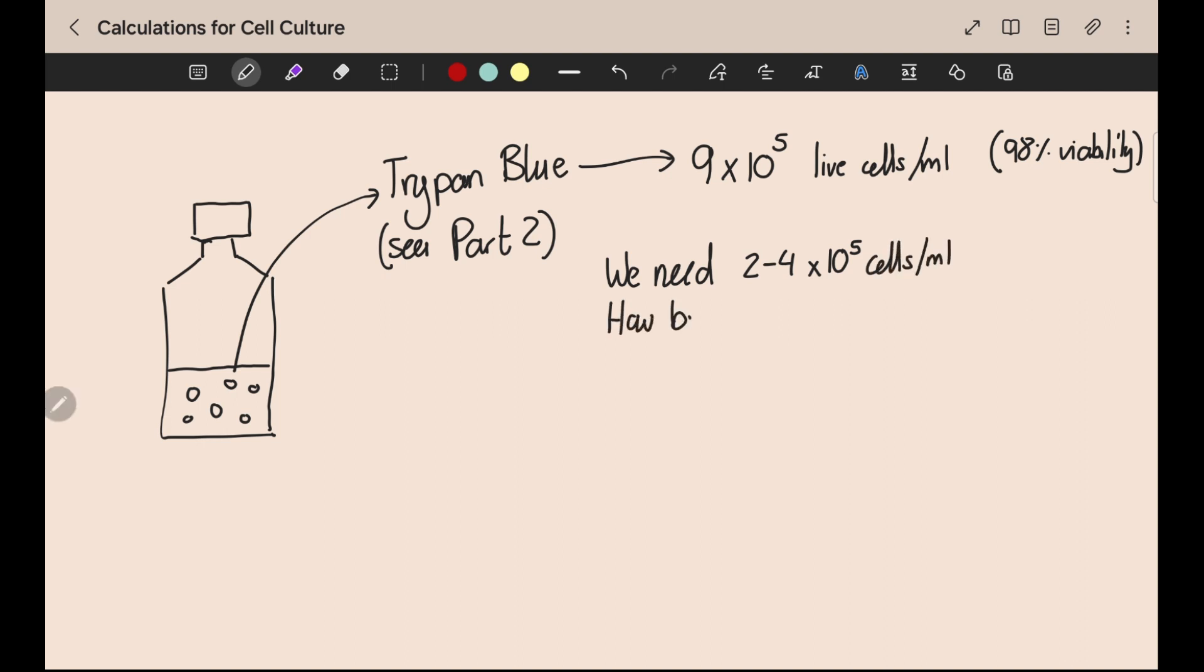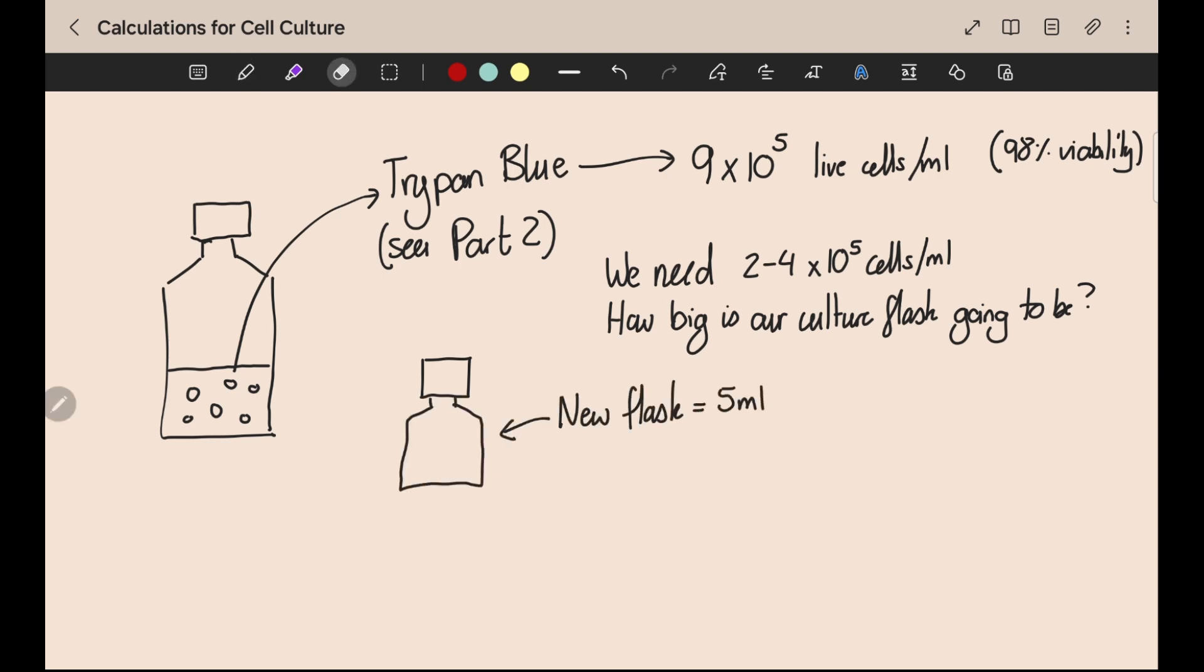You also need to know how big the culture flask is that you'll be using. For this example let's say you're using a small culture flask that only holds 5 mils. That means our known variables are: